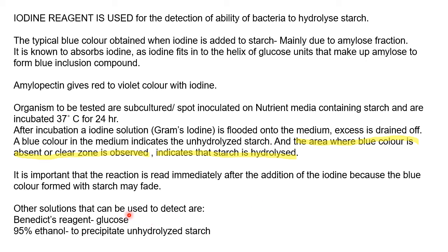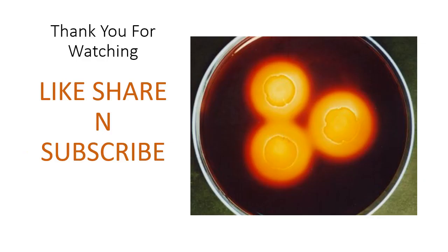Other solutions that can be used to read the results are Benedict's reagent, which reacts with the glucose from the hydrolyzed starch, and 95% ethanol, which reacts with the precipitate of unhydrolyzed starch. Glucose can be detected by Benedict's reagent, and 95% ethanol is used to detect the precipitate of unhydrolyzed starch. That was about the amylase or starch hydrolysis test.